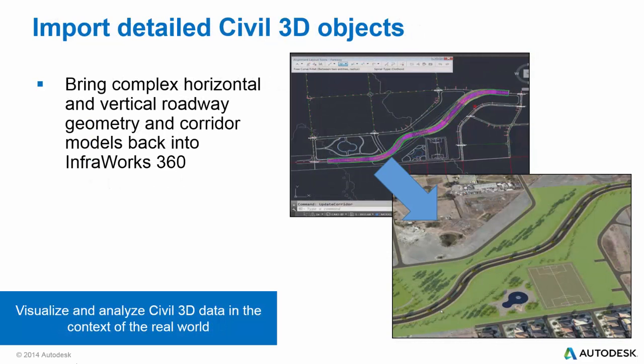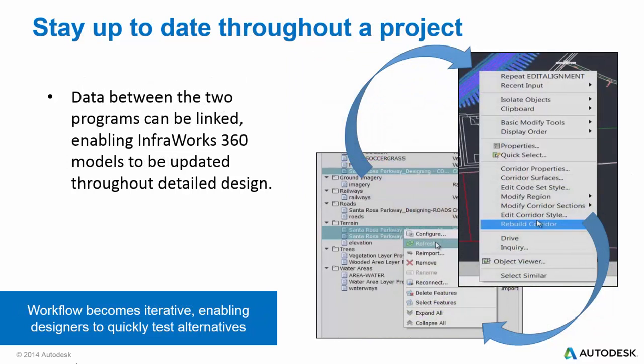After editing a roadway or other design elements in Civil 3D, data can be sent back to InfoWorks 360 for visualization and analysis in the context of the real world. Both complex horizontal and vertical geometries are now supported in InfoWorks 360, and corridor models can be brought into InfoWorks 360 as coverages. Once these design elements are configured, style rules can be applied to better communicate design intent. Data between the two programs can be linked, allowing InfoWorks 360 models to be updated throughout the detailed design process.